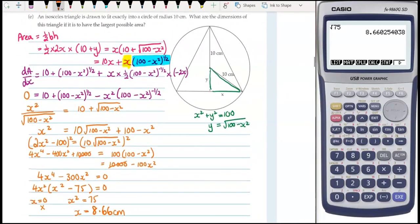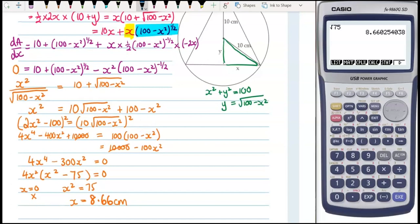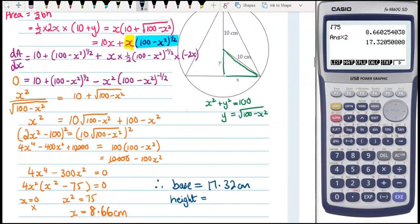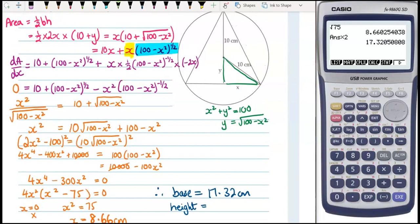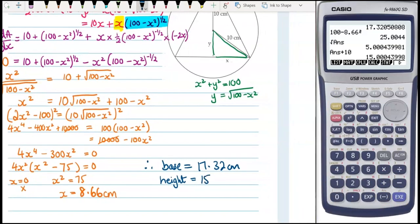The question asks for the dimensions of the triangle for the largest possible area. The base equals 2 times x, so 17.32 centimetres. The height equals y plus 10: that's the square root of (100 minus 8.66 squared) plus 10, which gives the height.